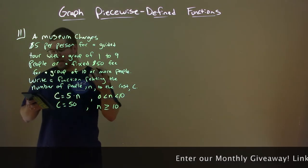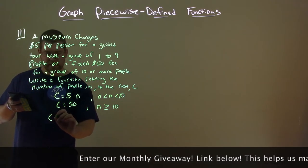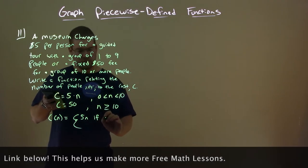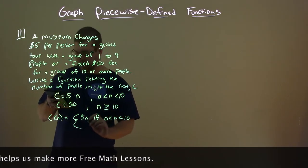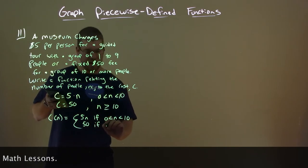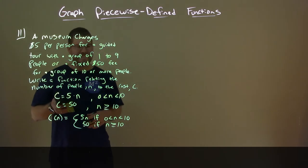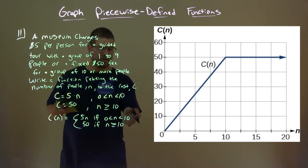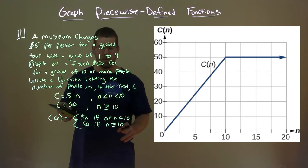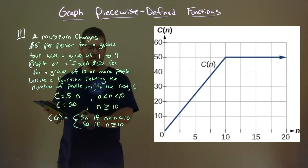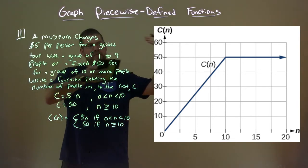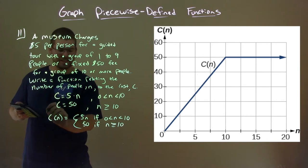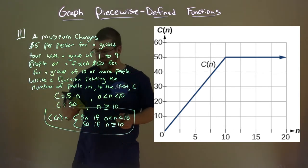So how would I write this as a function? Well, c of n is equal to a piecewise function, 5 times n if 0 is less than n which is less than 10, but then it's 50 if n is greater than or equal to 10. So we can see that graph here. Notice it's an increasing line, the first part, from 0 to 10, but not including 10. And then right there, it equals $50 if a group is 10 or more. And notice, we plug 10 into our function here, 5 times 10 is 50, so they do meet perfectly right there. So we have a graph that matches this piecewise function.